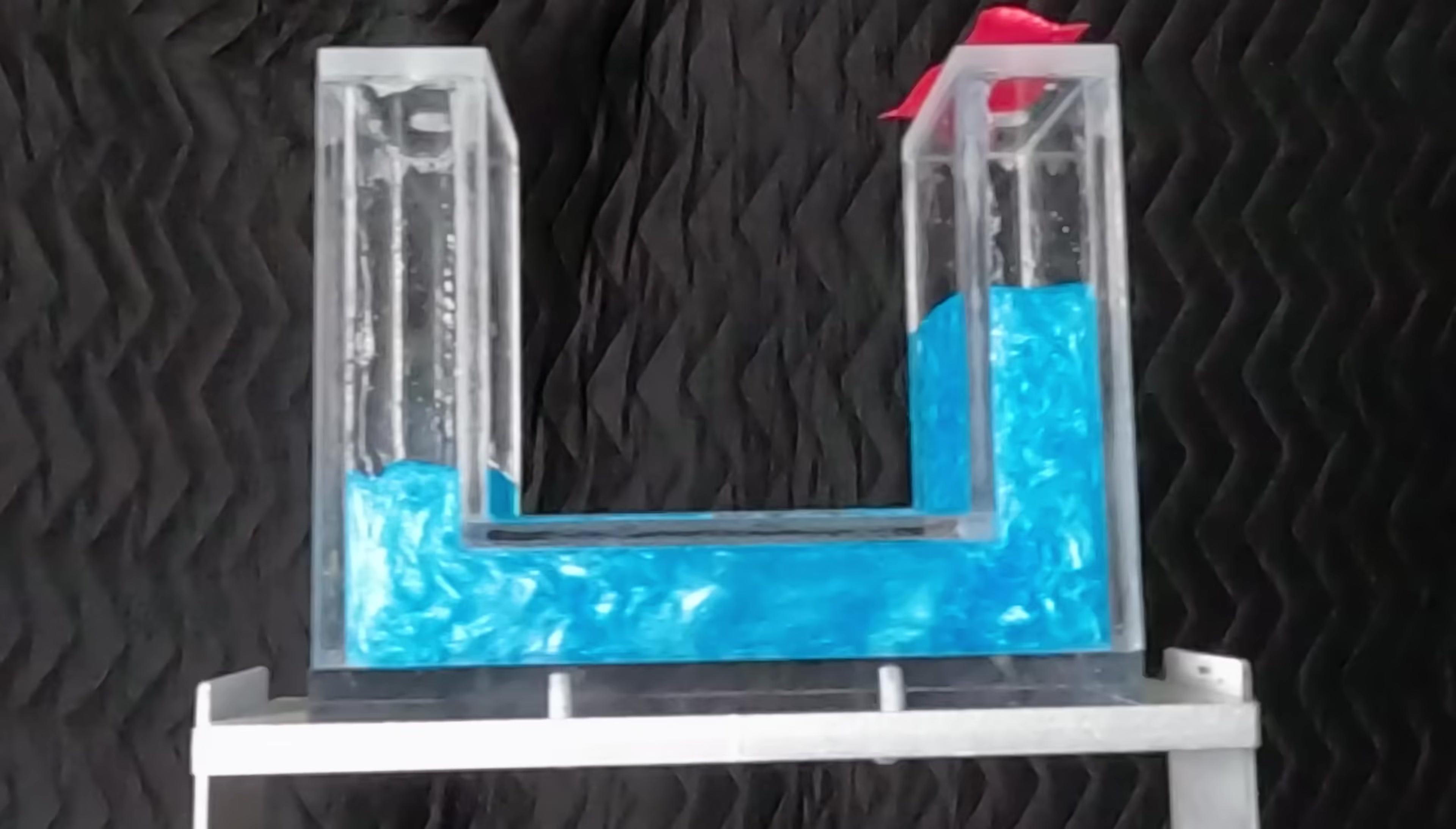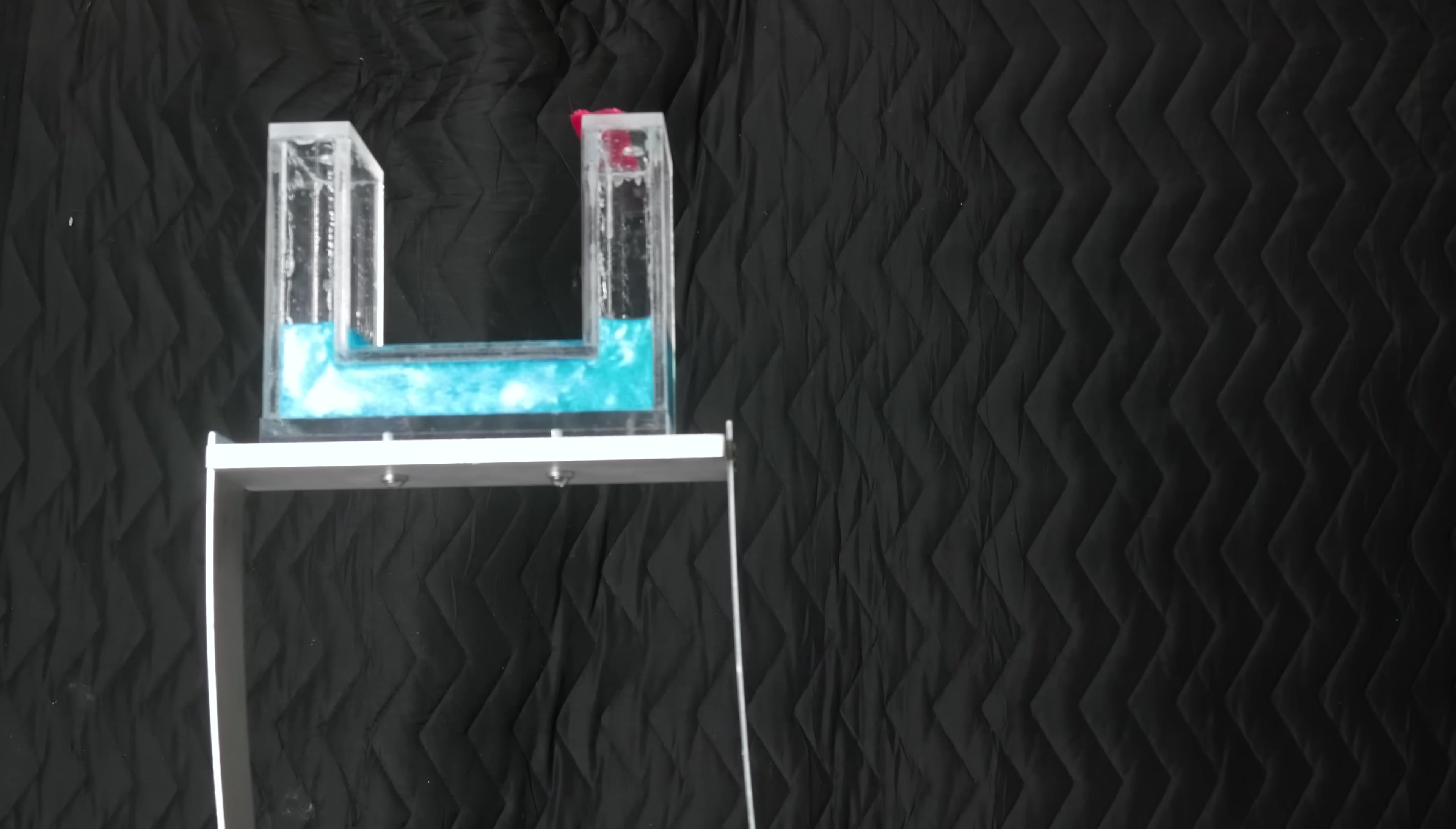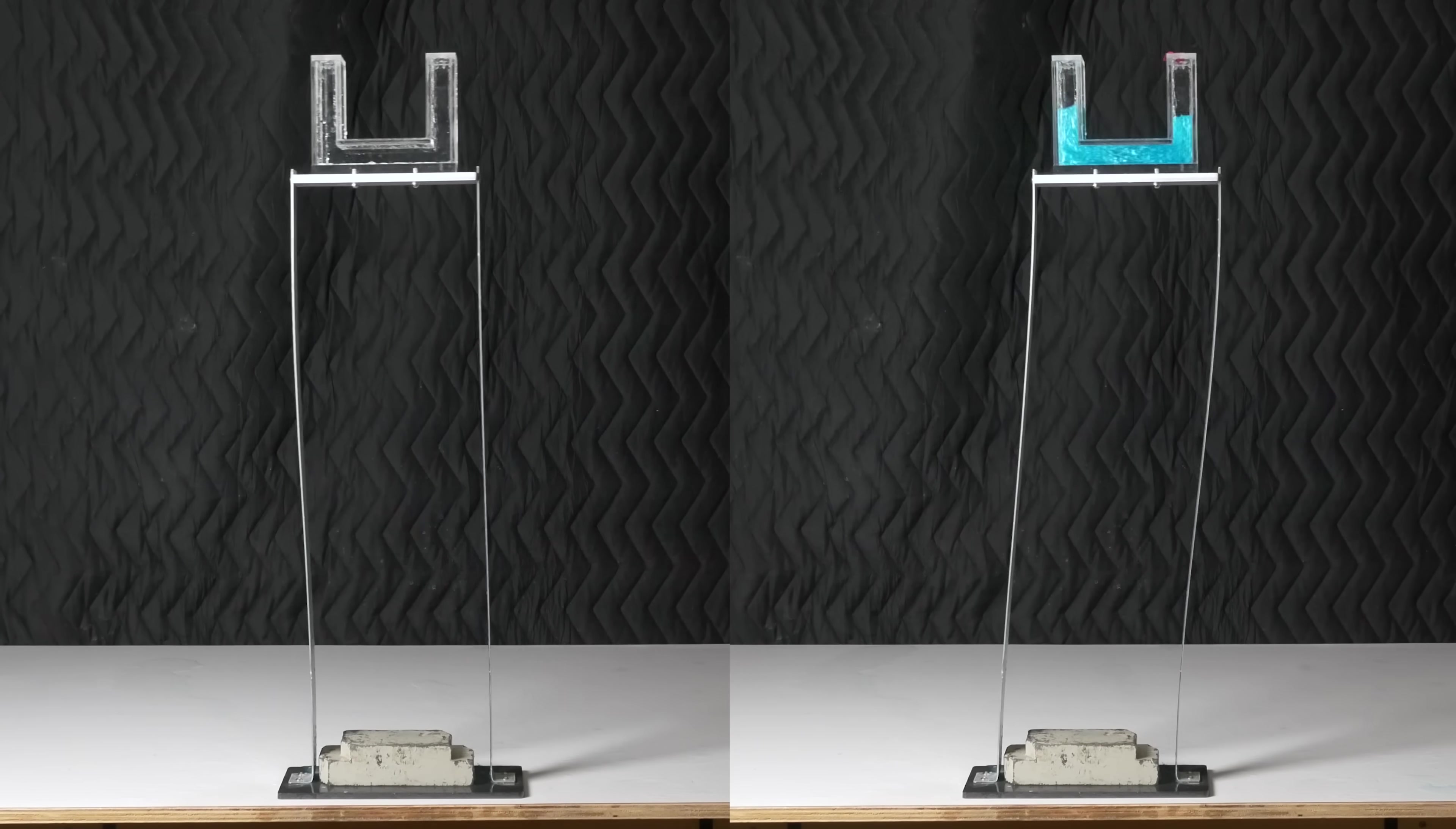For a tuned liquid column damper, the tuning mostly comes from the length of the liquid flow path. A longer path results in a lower frequency. The compression of the air above the column in my demo affects this too, and some types of dampers actually take advantage of that phenomenon. I got the best tuning when the liquid level was about halfway up the columns.